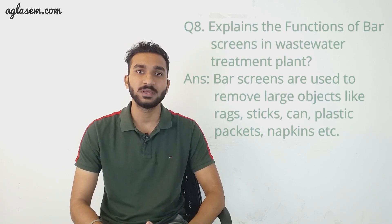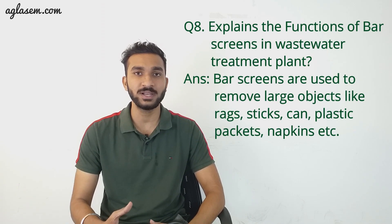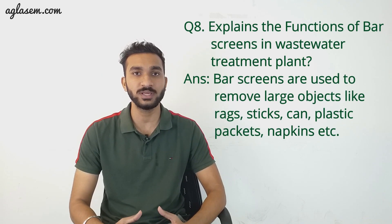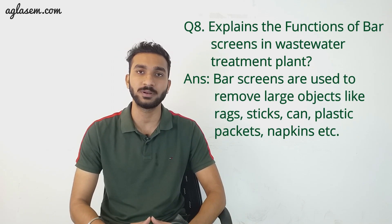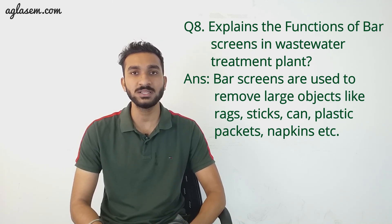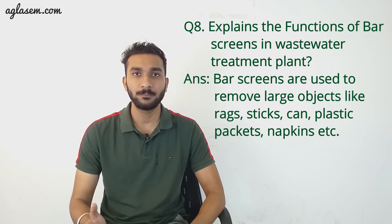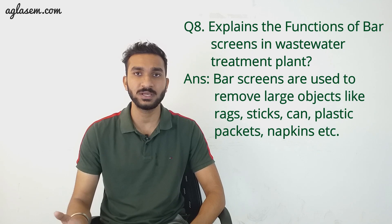Question number 8: Explain the functions of bar screens in wastewater treatment plants. Bar screens are used to remove large objects like rags, sticks, cans, plastic, napkins, packets, etc. from wastewater at the initial stage of treatment.